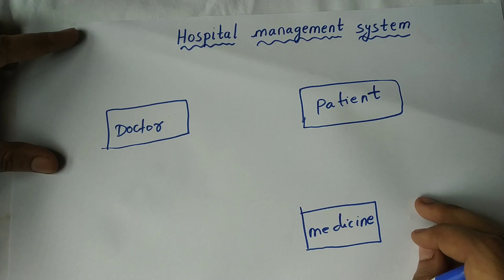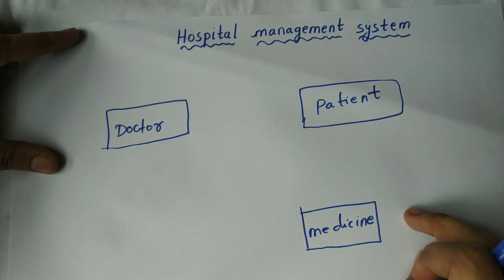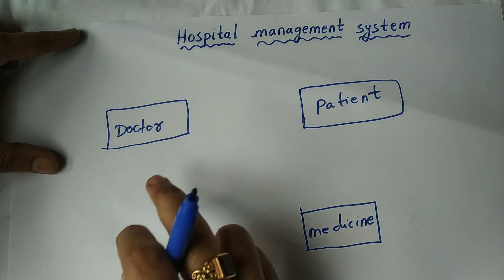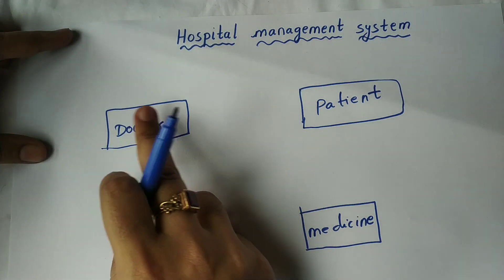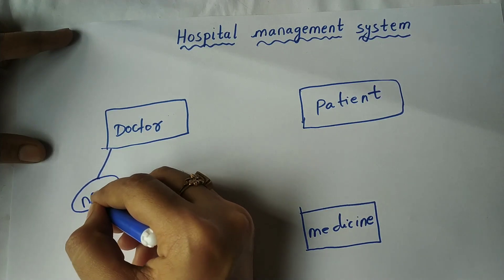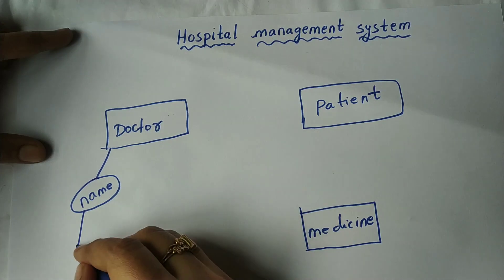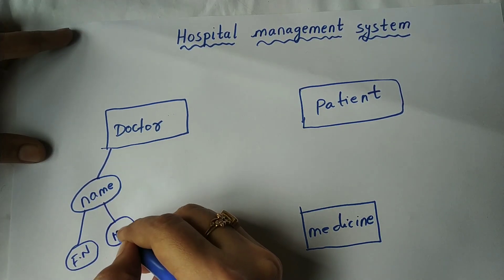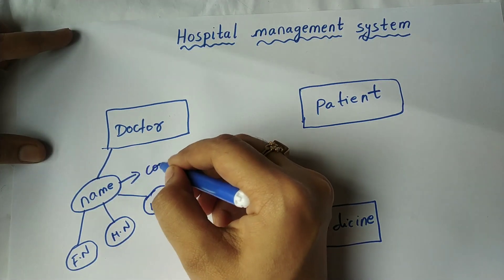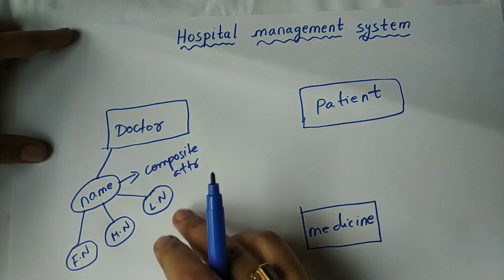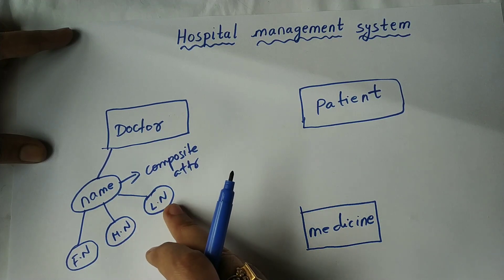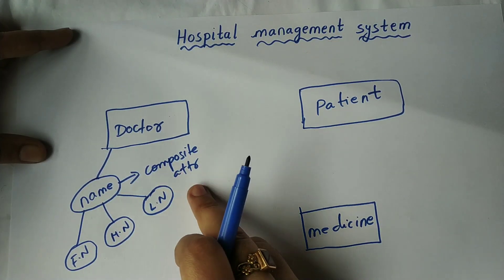The second step is to write the attributes associated with the entities. Attribute means characteristics of an entity, and an attribute must be written inside an oval. For the entity Doctor, the first attribute is Name. This name can be further divided as first name, middle name, and last name — making it a composite attribute, because we are able to divide it further.